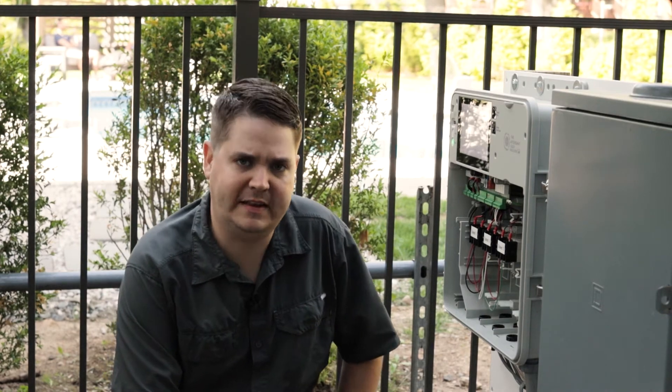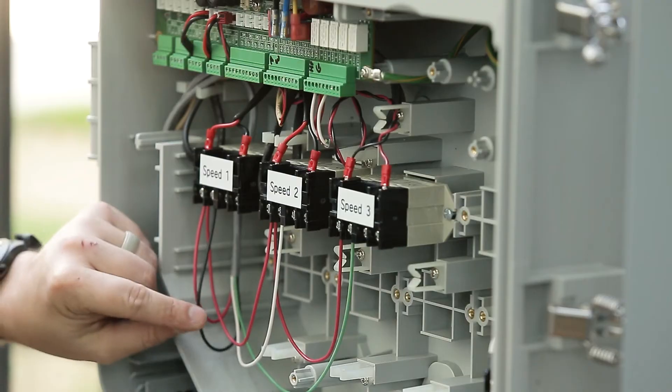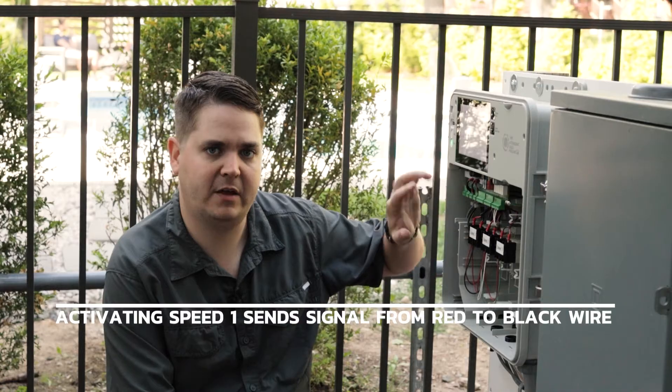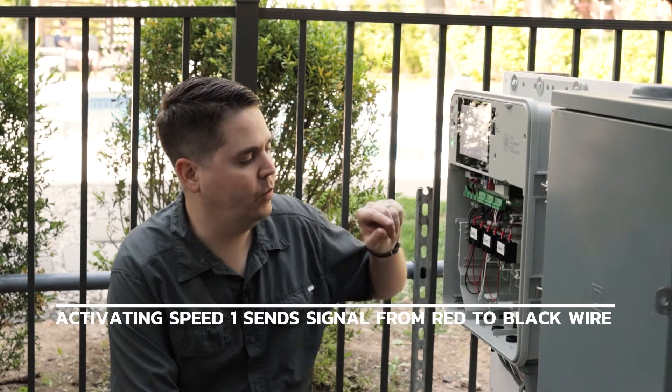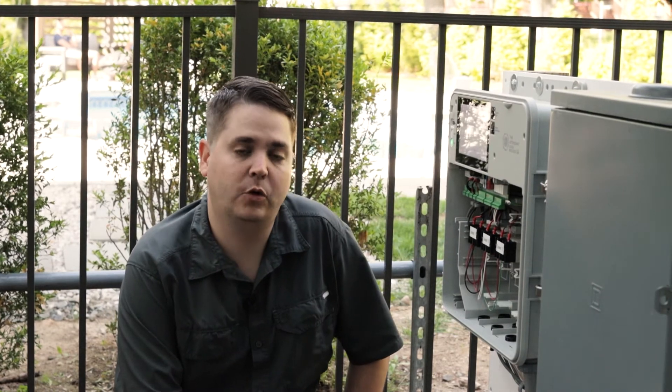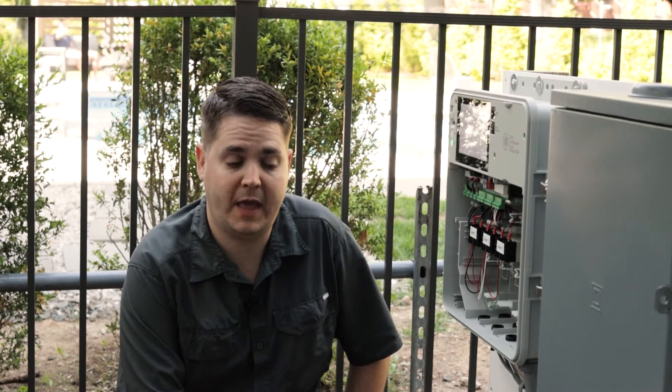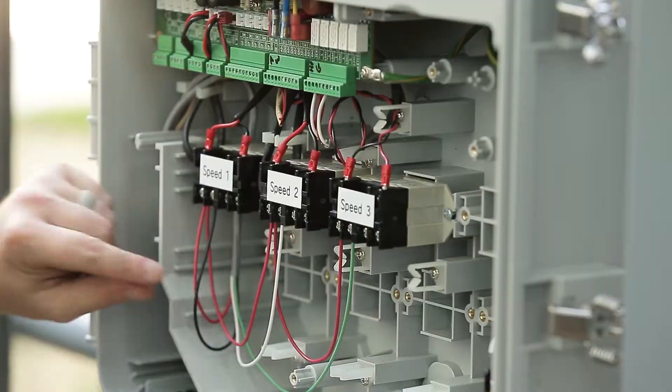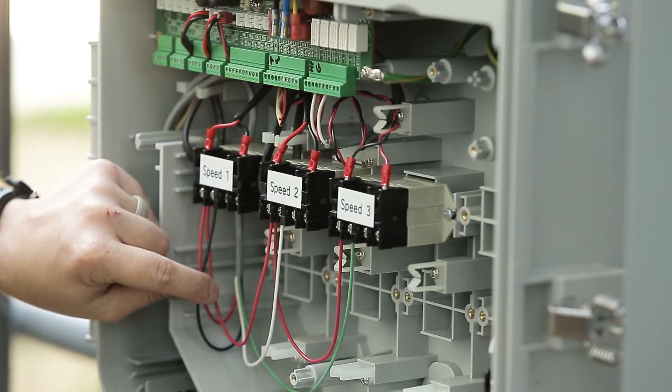We have another video that goes into the details on that. And then if we activate the speed 1 relay through the automation panel, it will send the signal from the red to the black wire, which the pump will see that signal, and then it will turn on to speed 1. And it will run speed 1 until the signal is broken by the automation signal through the relay.